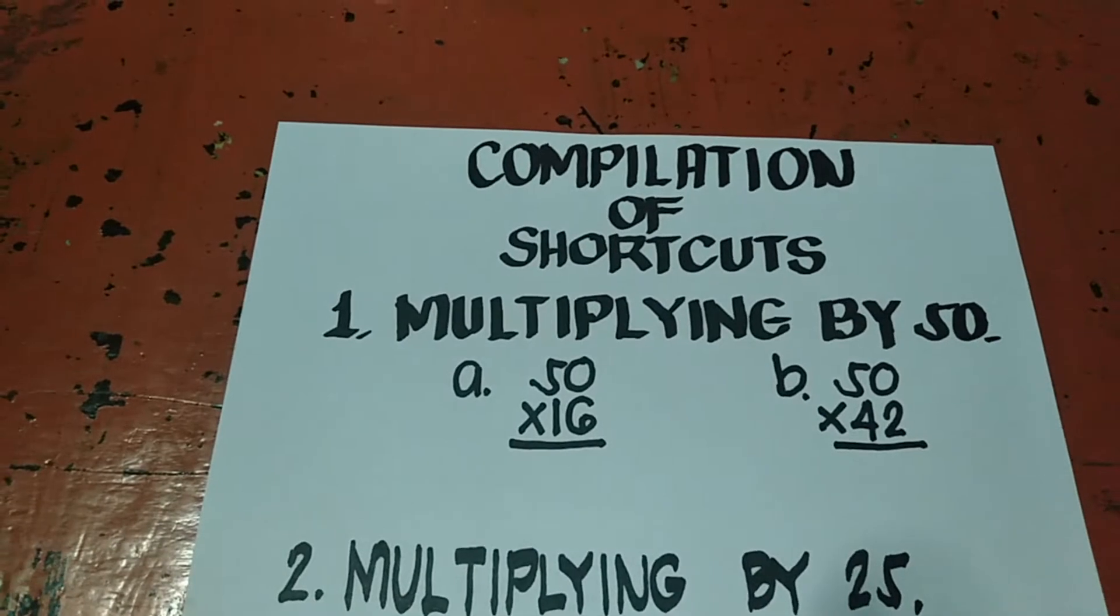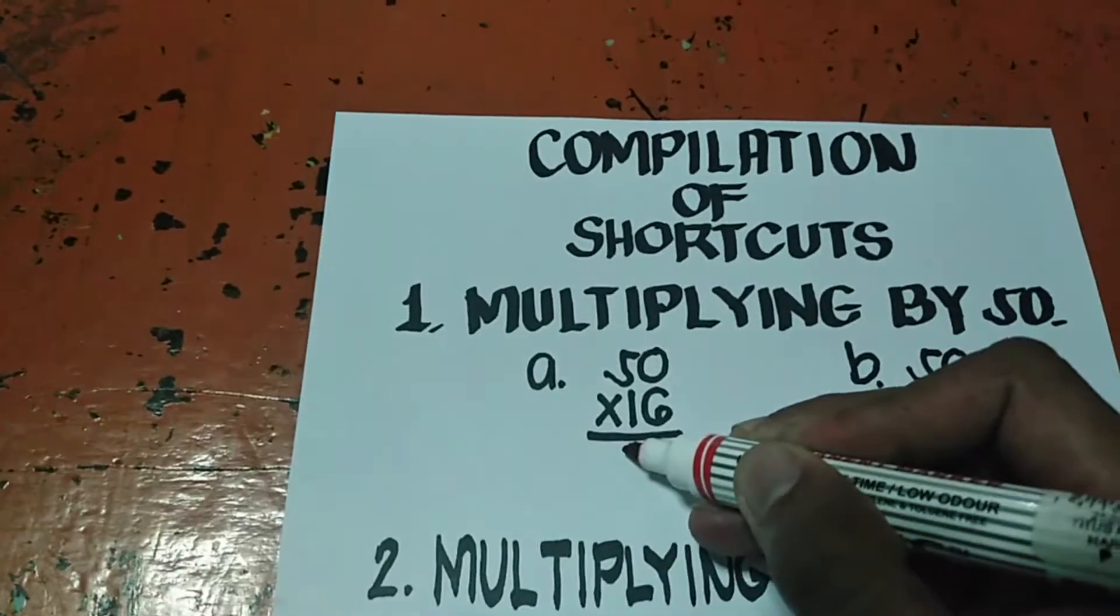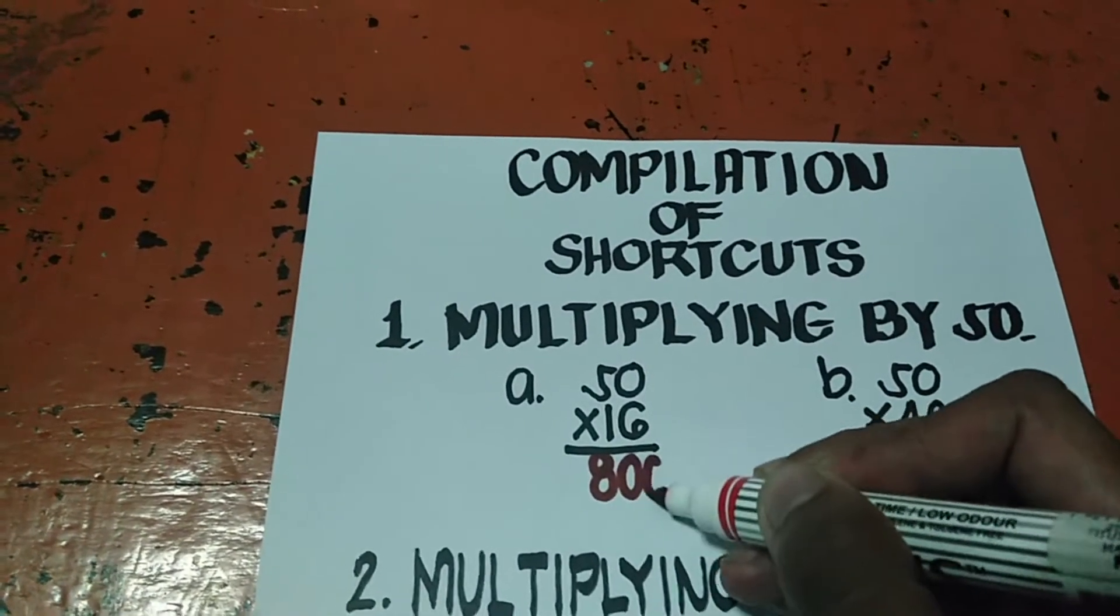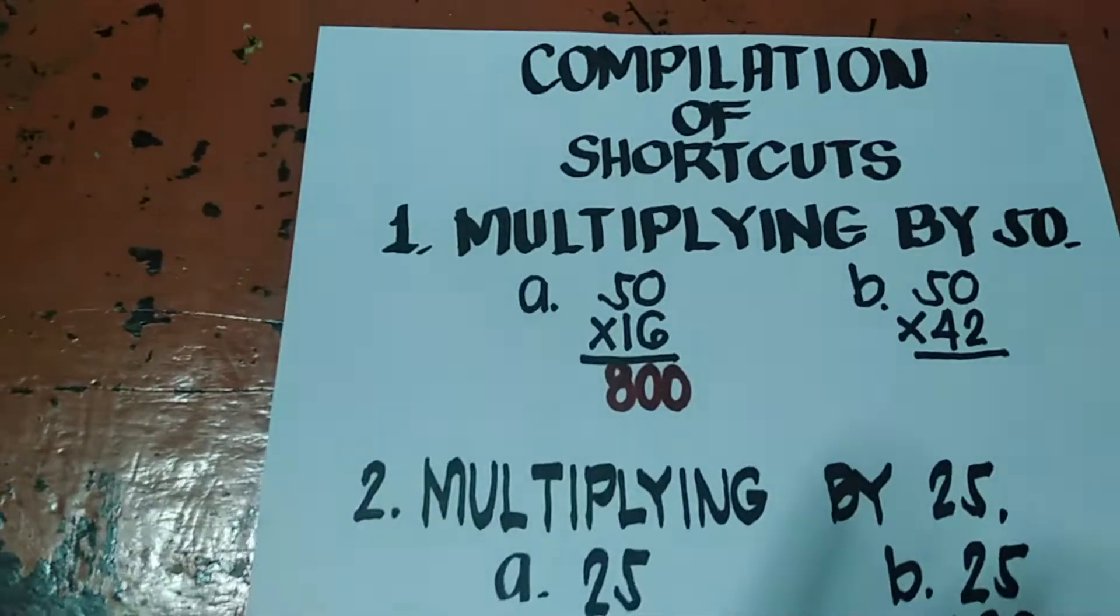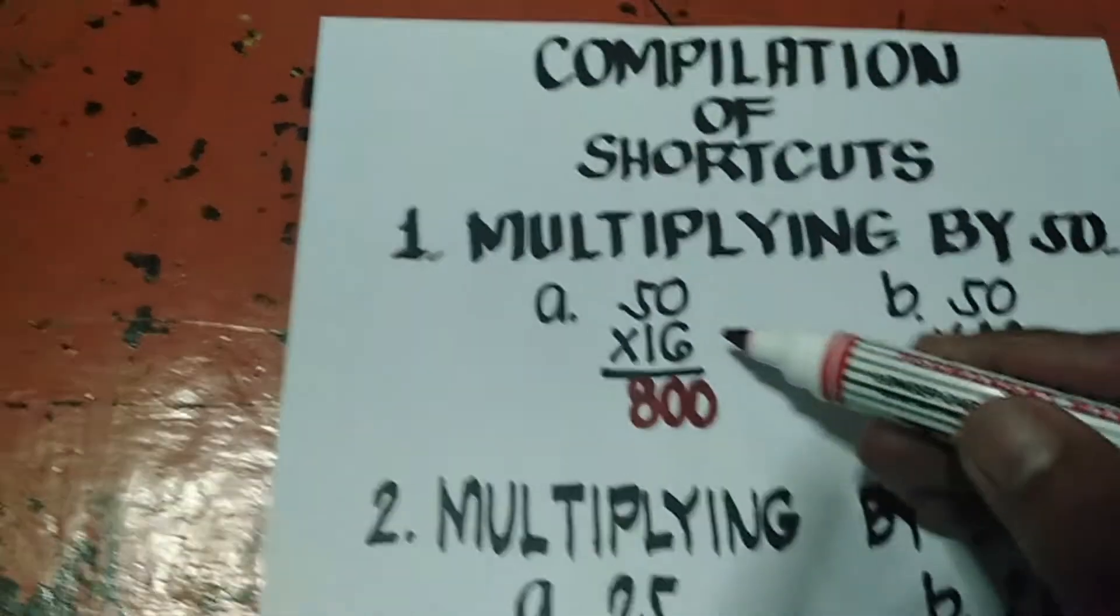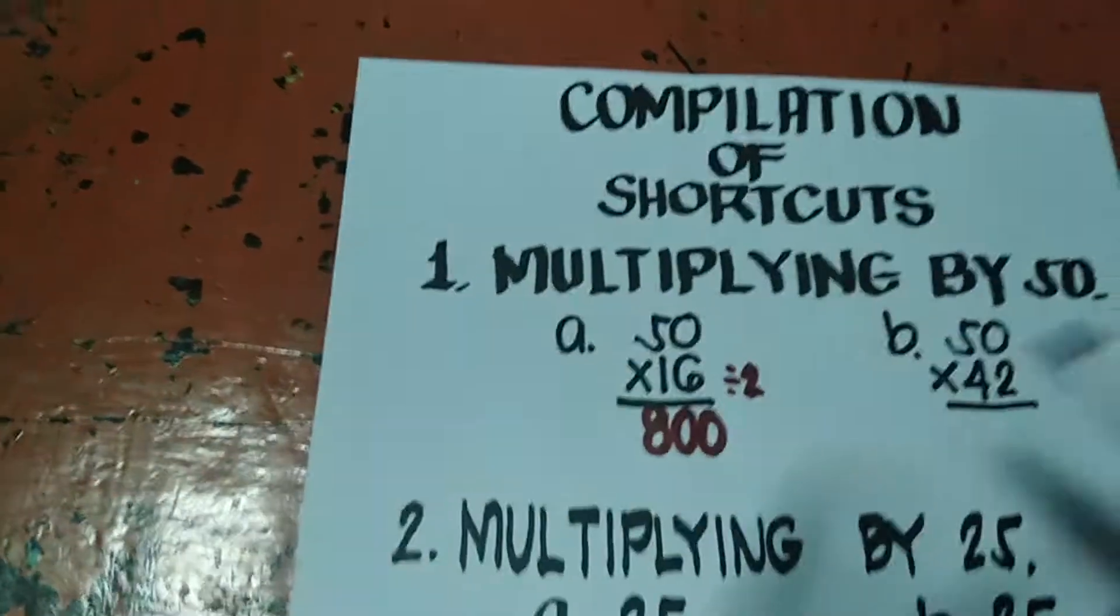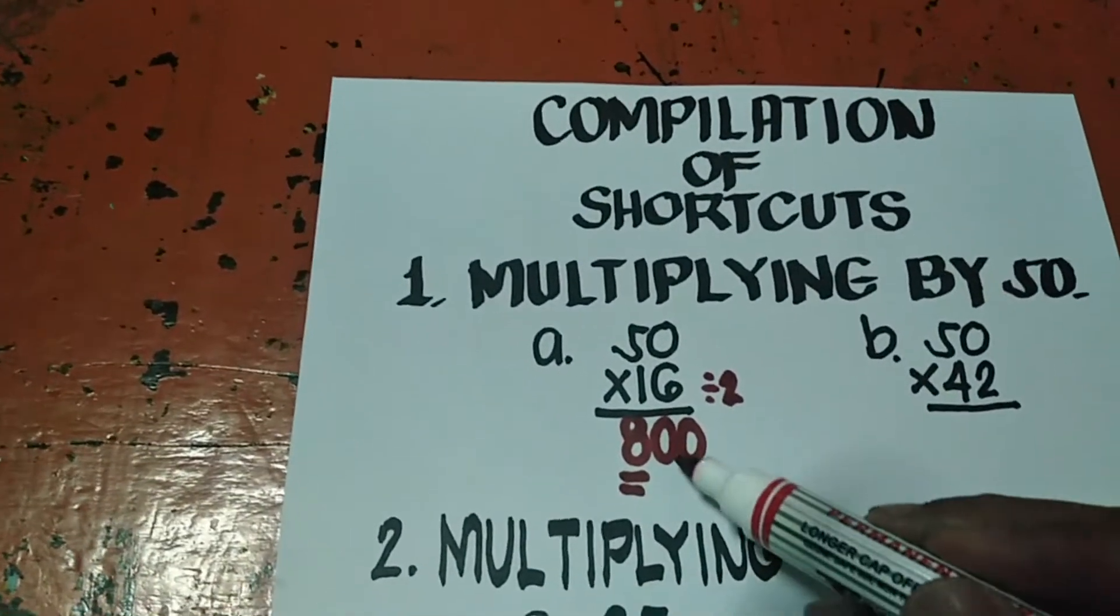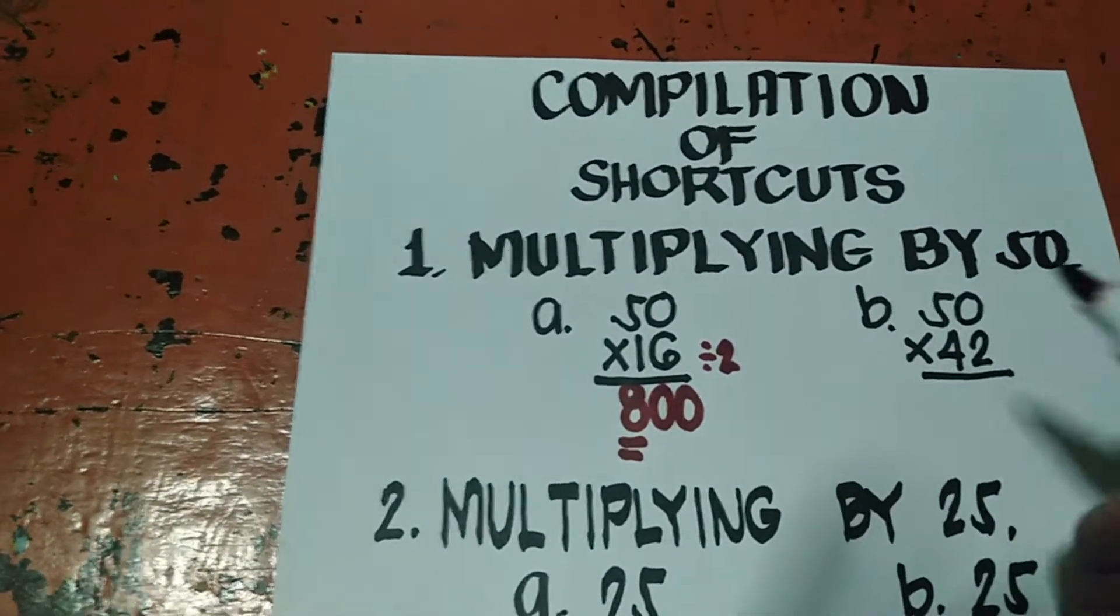Number 1, multiplying by 50. So 50 times 16 is, anong answer natin? 800. Ganoon yung shortcut. Ano yung shortcut na multiplying by 50? Yung 16, hahatiin mo lang, divided by 2. Pag 50, divided by 2, kaya lalabas doon 8. Tapos magdadagdag ng dalawang 0. Kaya ang sagot, 800.